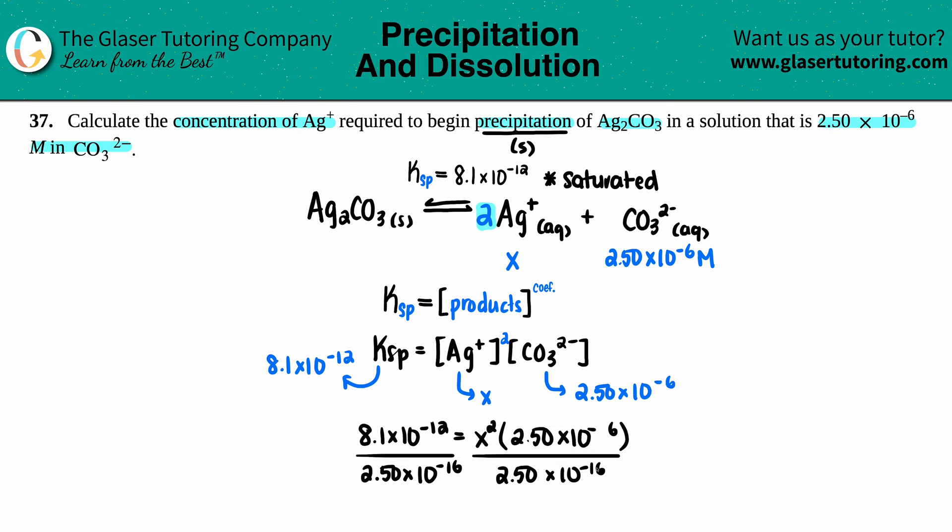This should have been 10⁻⁶, there we go. I'm going to change that. This is how we know what to expect. Now I'm going to do it again: 8.1×10⁻¹² divided by 2.5×10⁻⁶, okay, 3.24×10⁻⁶ equals x². Let's take the square root again and get the x value.